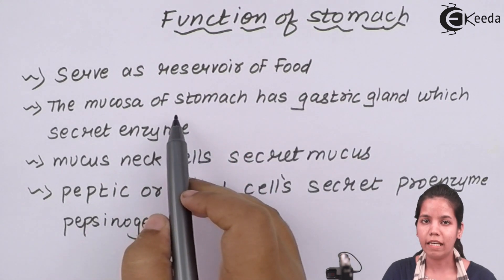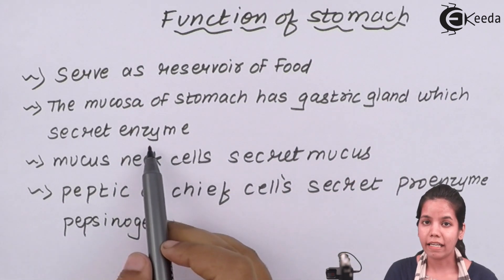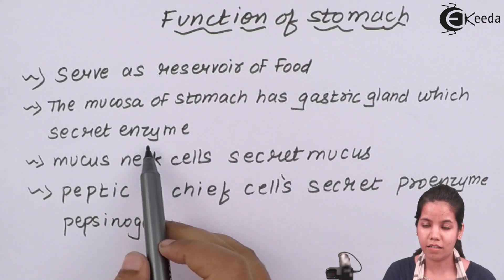The mucosal layer of stomach basically has gastric gland. Gastric gland basically secretes enzyme. Along with that, gastric gland secretes certain other things.